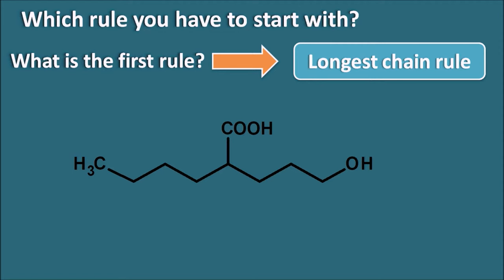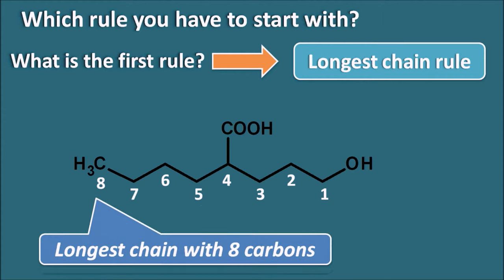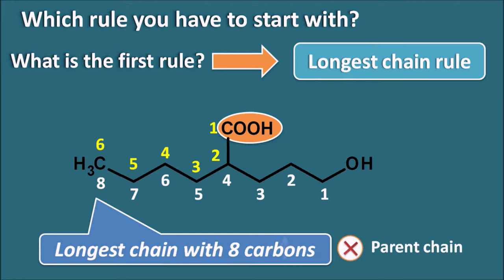Here we can select the longest chain and start numbering from any terminal: 1, 2, 3, 4, 5, 6, 7, 8. So it has an 8-carbon longest chain. But we can identify that COOH is a principal functional group in this compound, and we can select a chain which includes this principal functional group — numbering 1, 2, 3, 4, 5, 6 — giving only 6 carbons. Since the 8-carbon chain does not have the principal functional group, we should not select it as the parent chain. The parent chain should include the principal functional group. That's why the longest chain rule is not the first rule in IUPAC nomenclature.